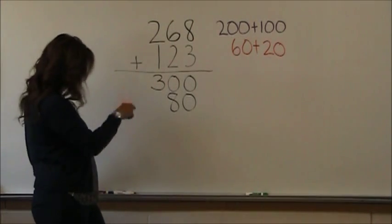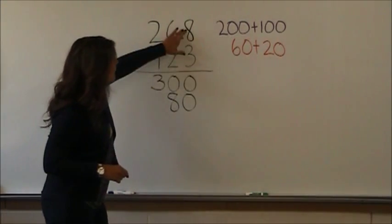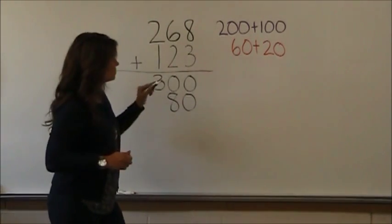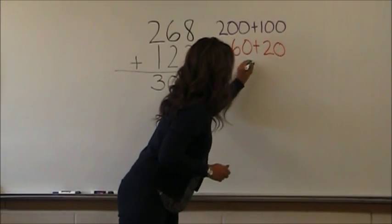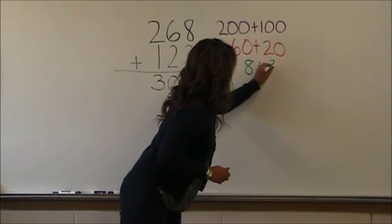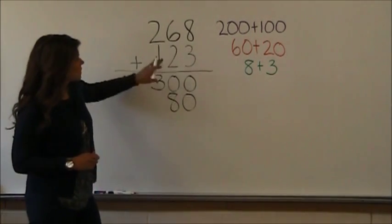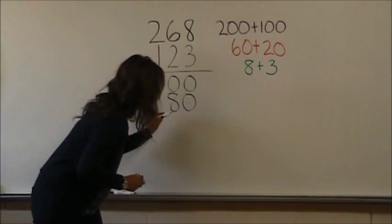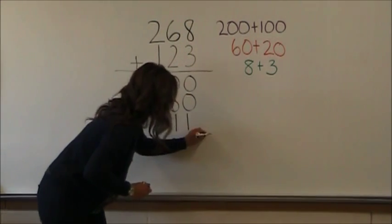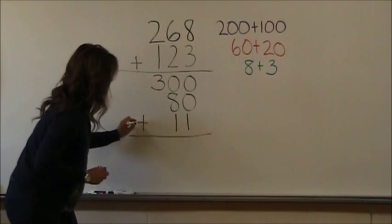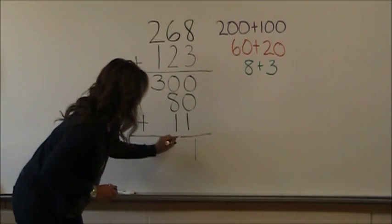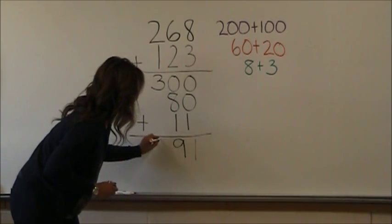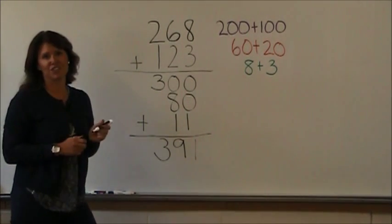Now I'm moving on to the ones column. Eight plus three. Eight plus three is eleven. One, nine, three. There's my answer.